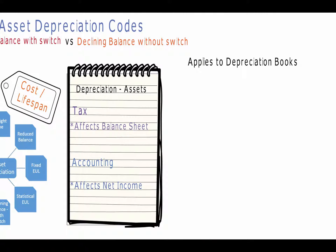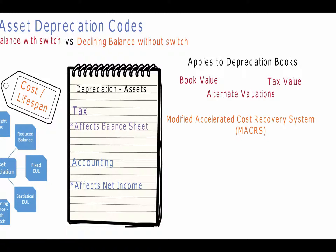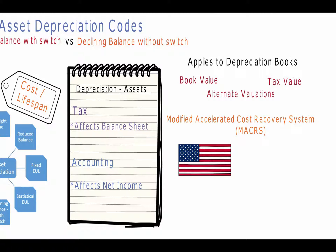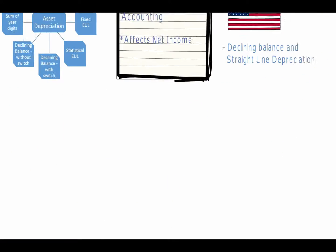Depreciation codes can be applied to all depreciation books, such as book value, tax value, and all alternate valuations. The Modified Accelerated Cost Recovery System, or MACRS, is the current tax depreciation system in the United States of America. The MACRS only allows declining balance and straight line depreciation, and for this reason, CISPRO allows users to use the declining balance with switch and declining balance without switch depreciation methods.